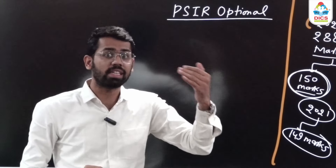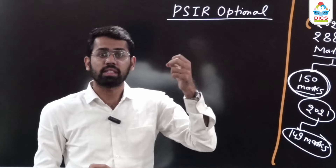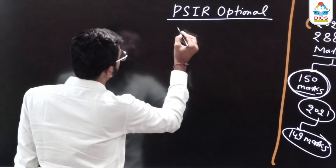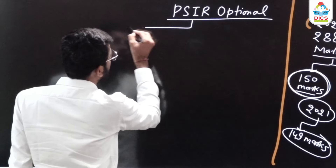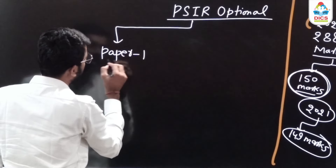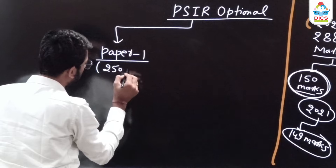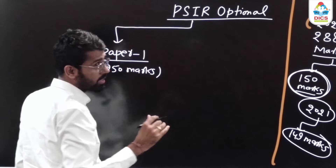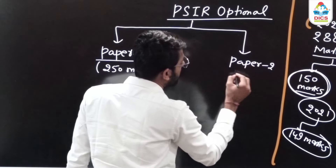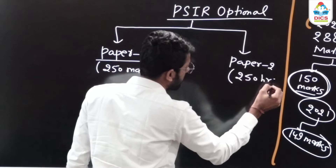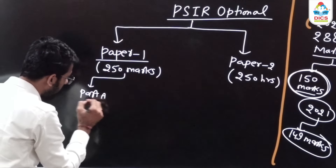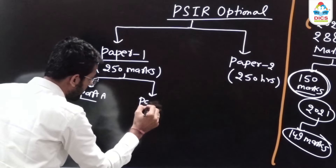PSIR is a very good optional with many linkages to your GS subjects — GS2, GS4, and the Essay paper. In PSIR, you have two papers: Paper 1 and Paper 2, each of 250 marks, making the total optional score 500 marks. Each paper has a three-hour duration. Paper 1 has two parts: Part A and Part B.